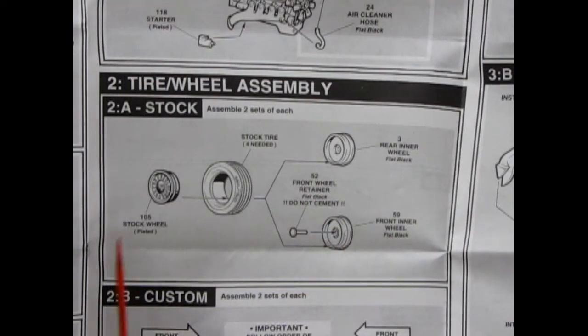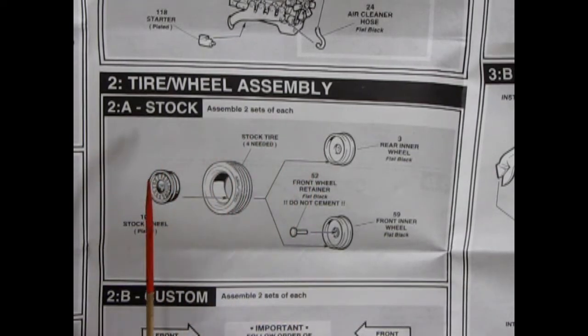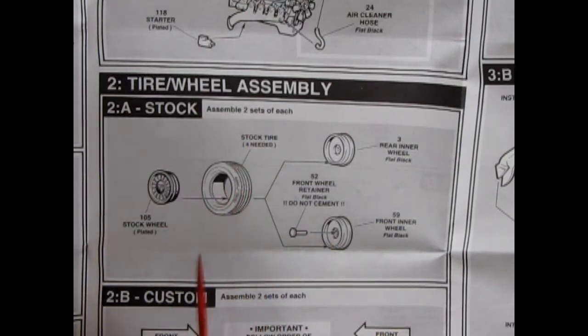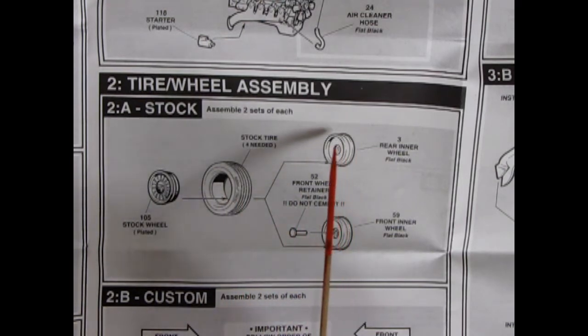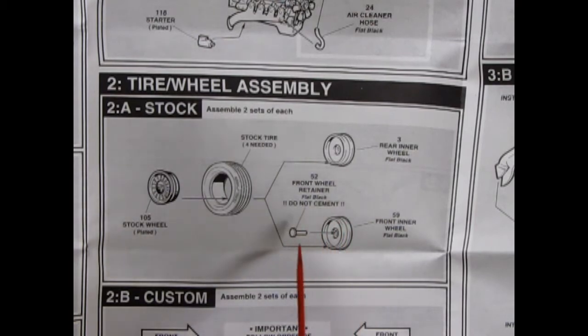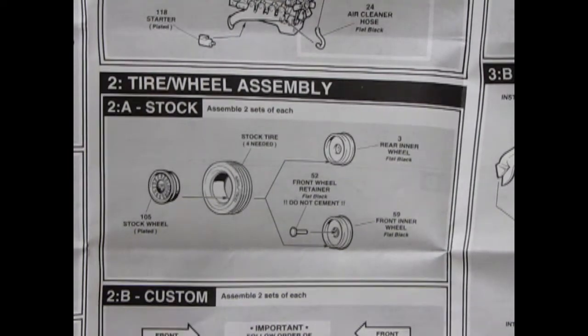Next up in step number two, we have our tire wheel assembly. And 2A is our stock wheel. And it says assemble two sets of each. So we have that stock Ford wheel, which again is like on the Torino and Talladega. And it will go into these Goodyear tires. And then we've got our rear wheel back and the front wheel, the back of the front wheel. And this one has the pins that goes through. So it could be originally an MPC kit. I'll have to look at those boxes there.